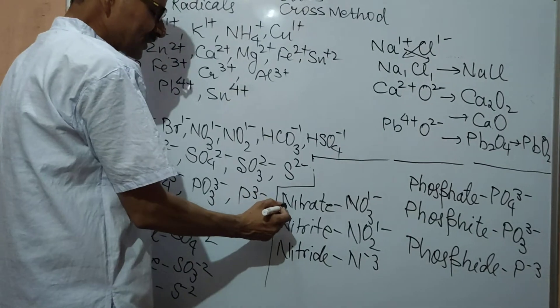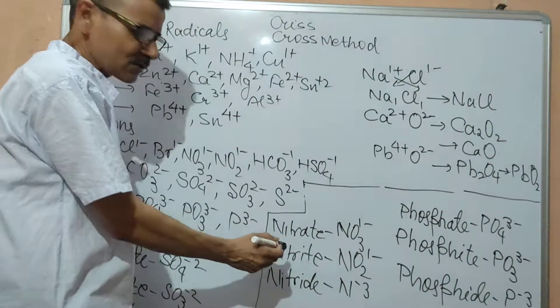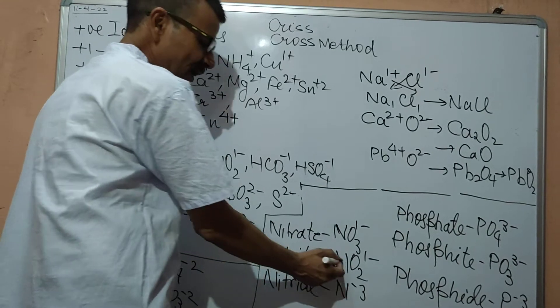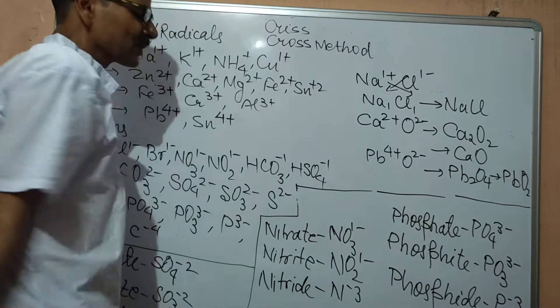Then second possibility is between the nitrate, nitrite and nitride. Nitrate, NO3 1-. Nitrite, NO2 1-. Nitride, N 3-.